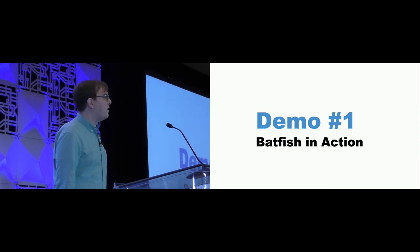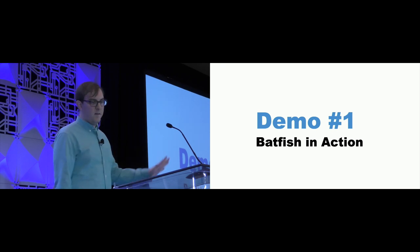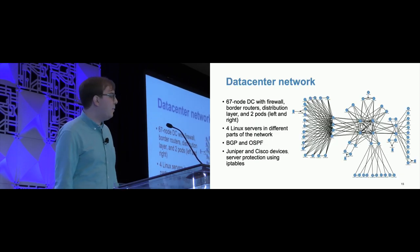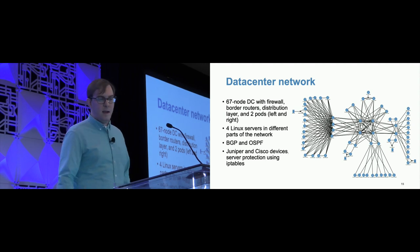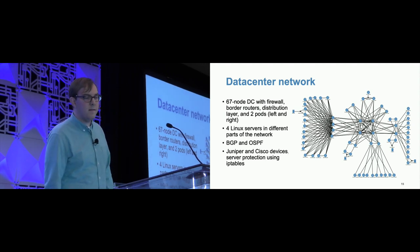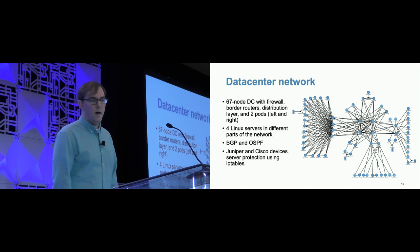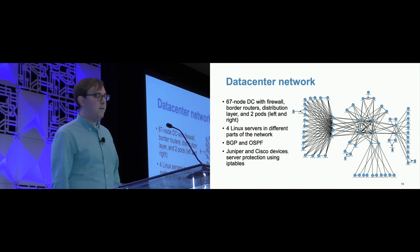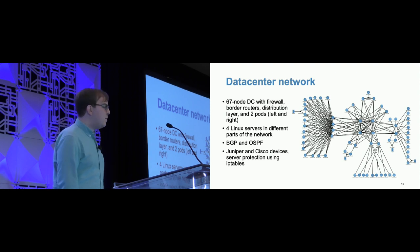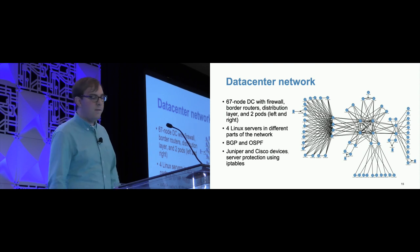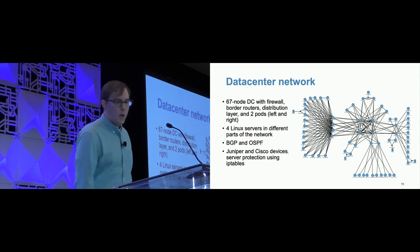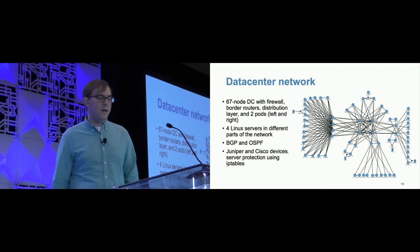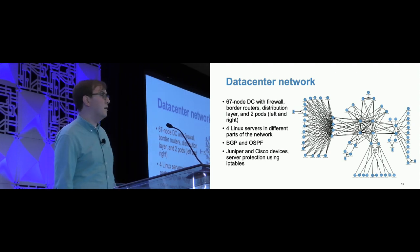In the next section I've got a series of demos. For this first set of demos, I'm using a sample data center network — a realistic network with 67 nodes, a mix of Juniper and Cisco devices. There are two pods on the left and right, four Linux servers in different parts of the network. We're using BGP and OSPF to route traffic, the Linux devices use IP tables, and this is modeled on networks we've seen in production.